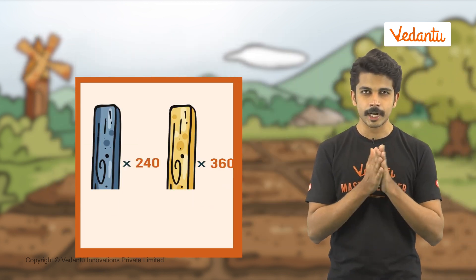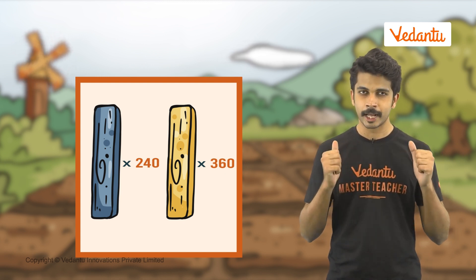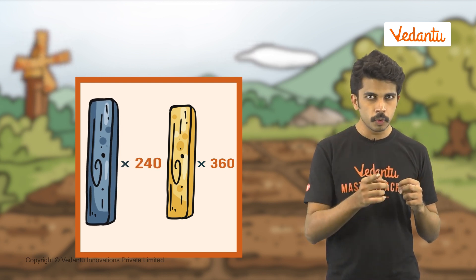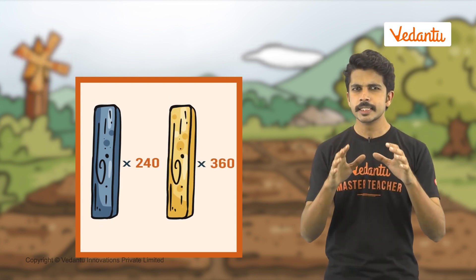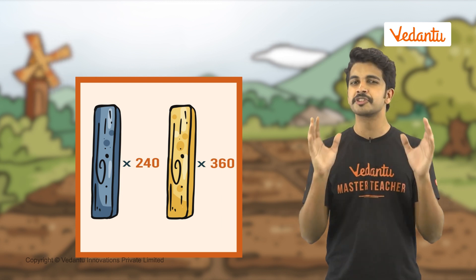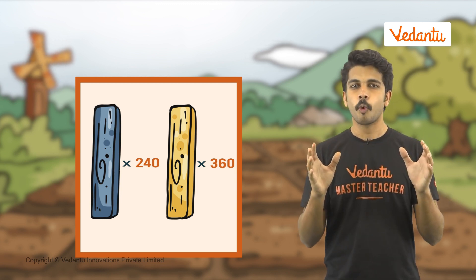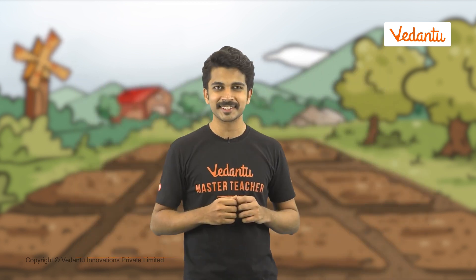Now let's start putting up the fence. I had a collection of fence pipes that I bought. There are 240 blue ones and 360 yellow ones. Is there a way we can organize them into smaller groups of largest size where they are kept evenly? The HCF will help us. For such large numbers, listing out all the factors sounds like a task.